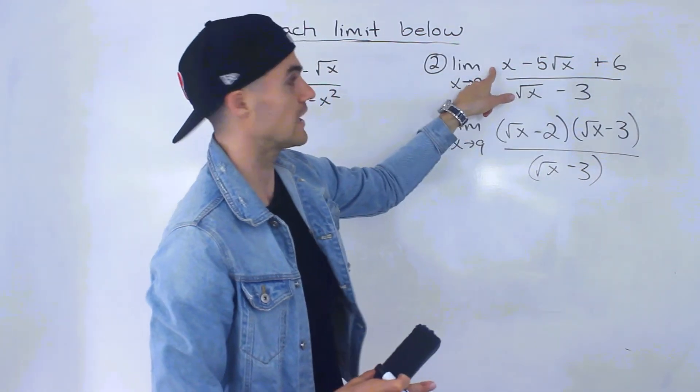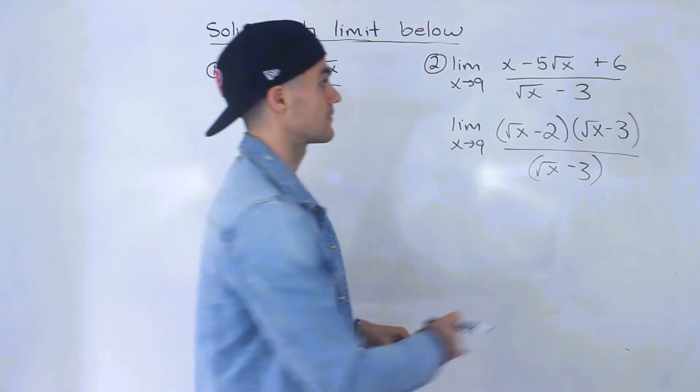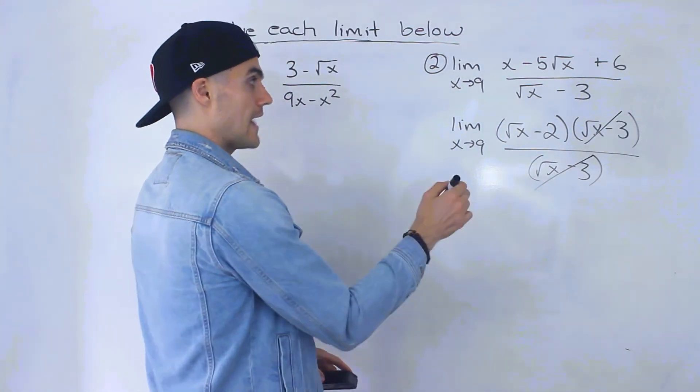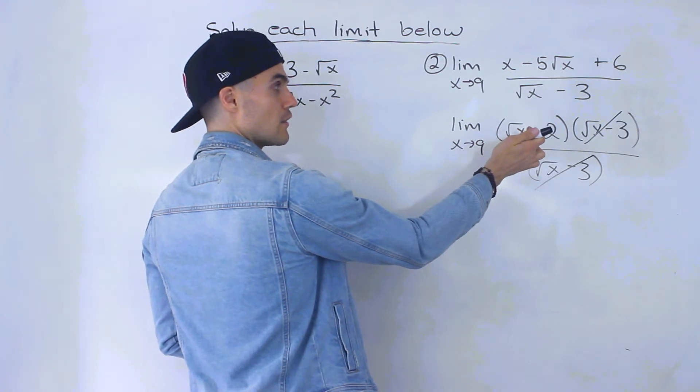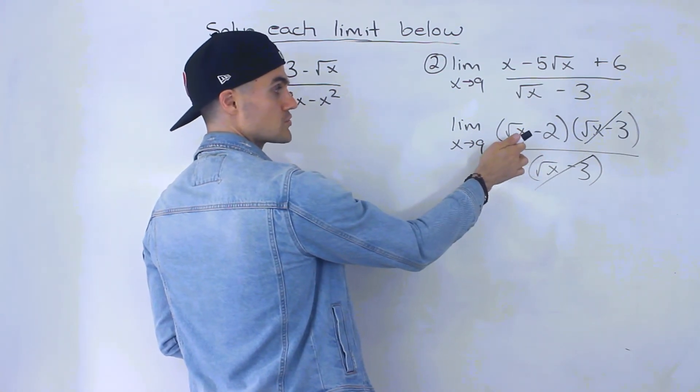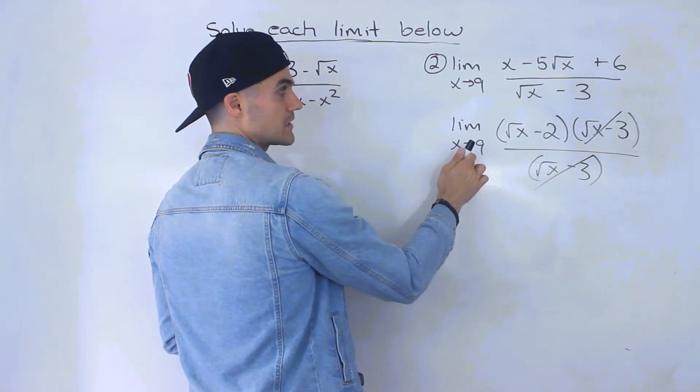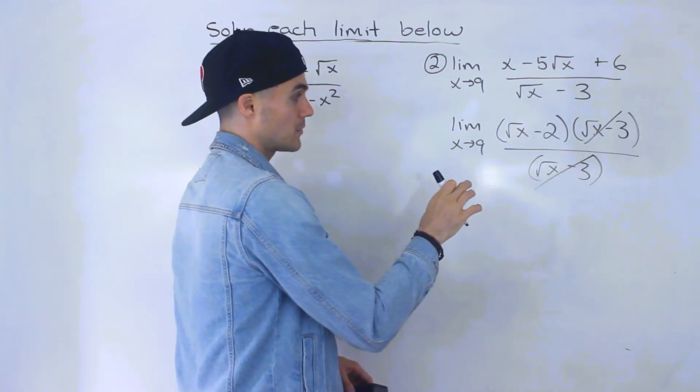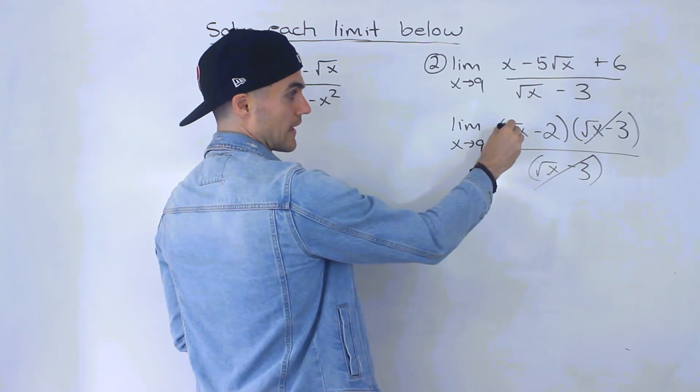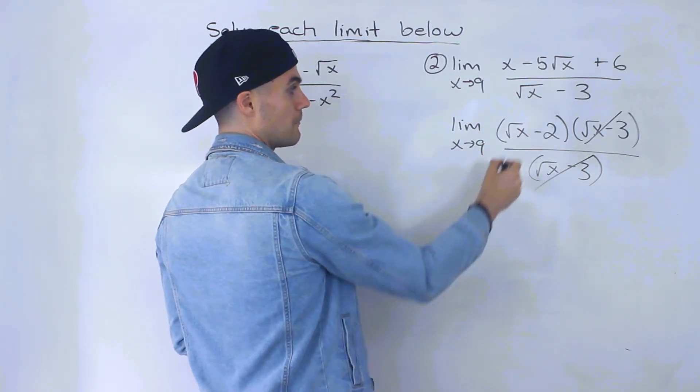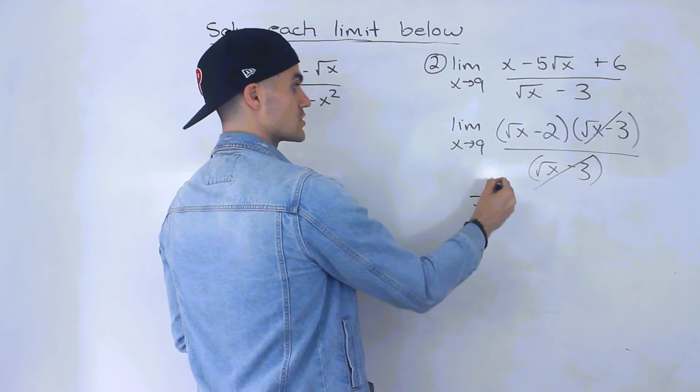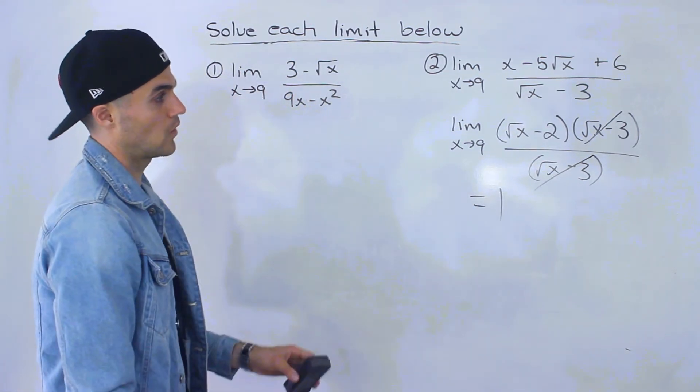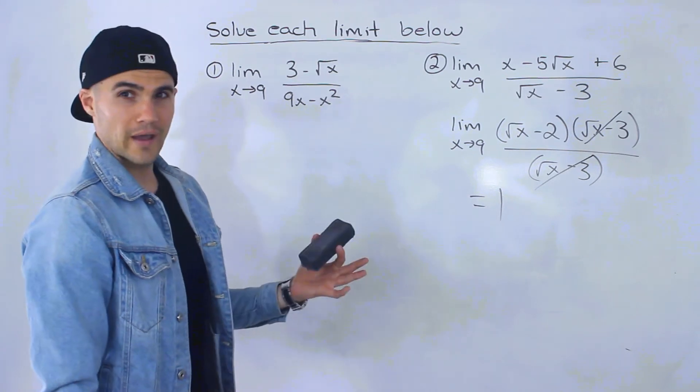In your shoes, it might be tough to tell how to go from here to here. If you foil this out, you'd get that expression. The root x minus 3 terms cancel out. Now we can plug in 9. If we plugged in 9 initially, the denominator would be 0, but after canceling, we can plug in 9. Root 9 is 3, minus 2 is 1. So the answer is 1.